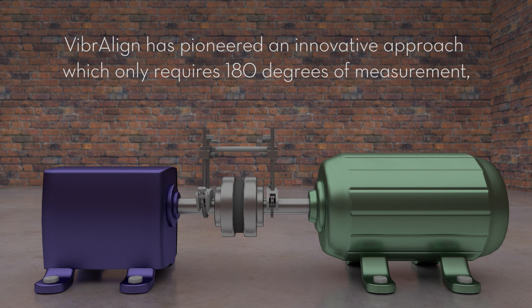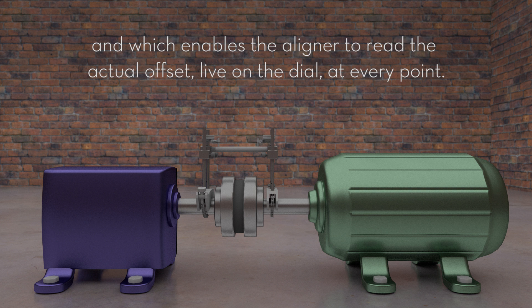Vibraline has pioneered an innovative approach to shaft alignment which only requires 180 degrees of measurement and which enables the aligner to read the actual offset live on the dial at every point around the shafts.